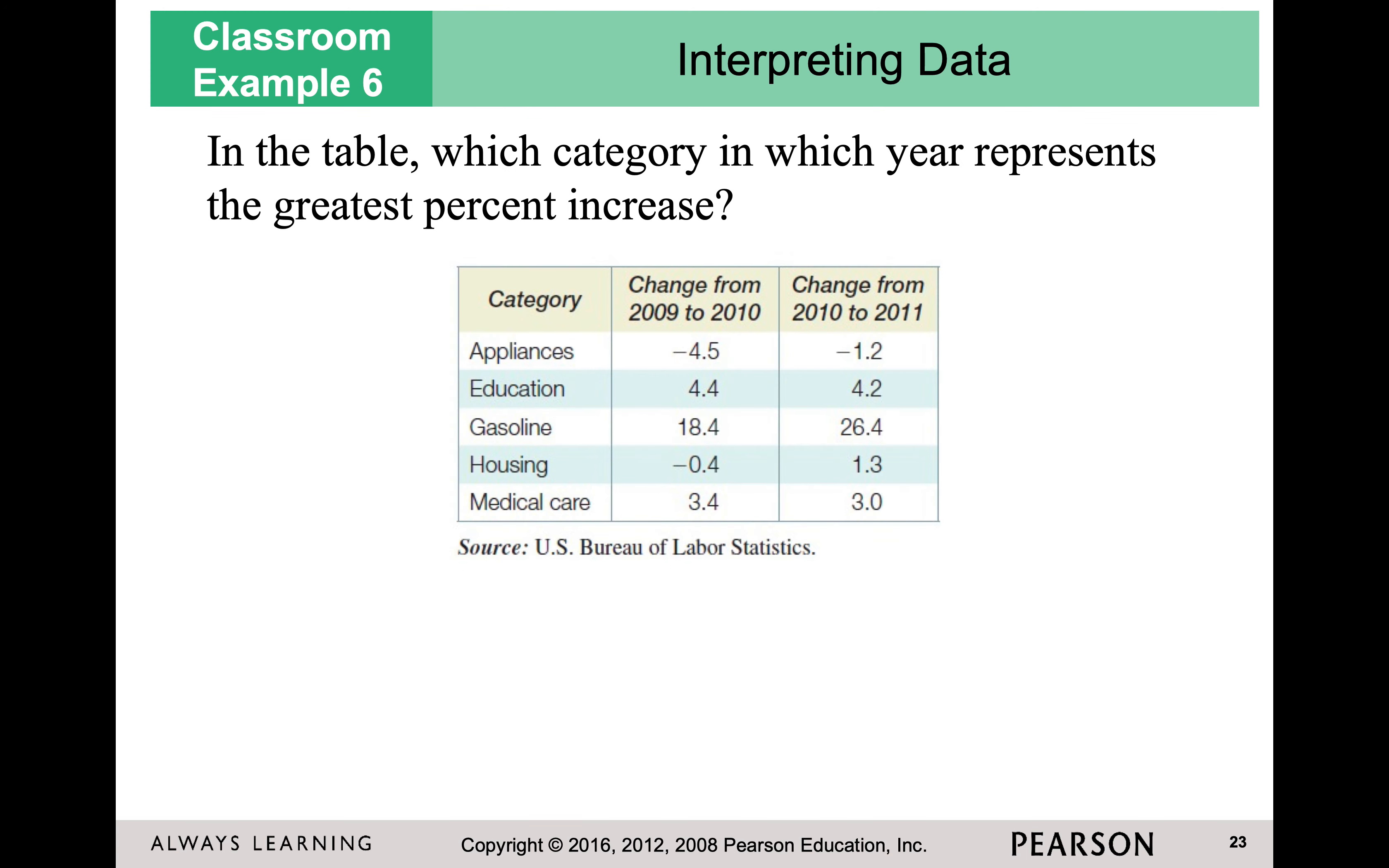Here I have a table of data which year represents the greatest percent of increase. This is not something you can probably just look at the table and figure out. You may have to actually do some division here, or maybe you're very numerically gifted, and you can look at this and know that gasoline changed the largest amount. If these numbers are really close together, you'd probably want to use division. We can complete the division of 1.2 divided by 4.5, 4.2 divided by 4.4 to get those percents. And that is the end of 1.3.